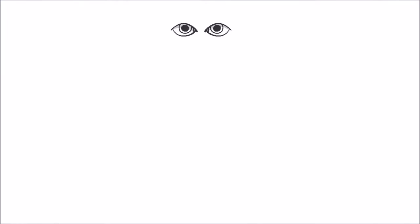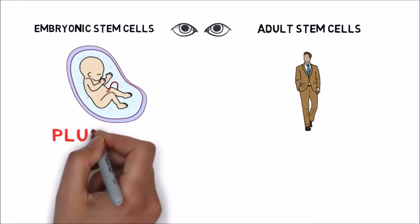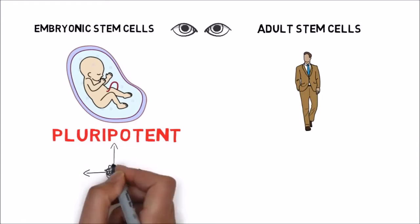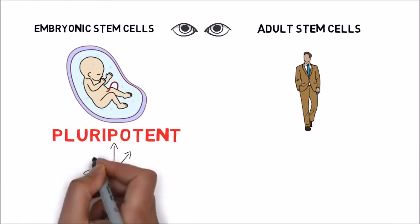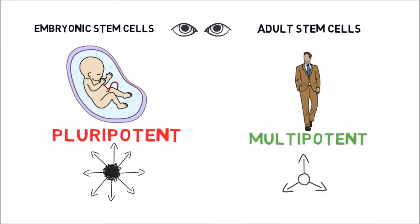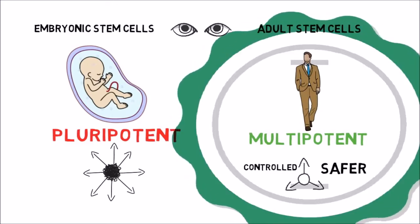First, let's look at the difference between human embryonic stem cells and adult stem cells. The embryonic stem cells are pluripotent, meaning that they can become any of the more than 200 known differentiated cell types of the human body. On the other hand, adult stem cells are multipotent, meaning that they can develop into more than one cell type, but are more limited and controlled and thus safer than pluripotent cells. We perform the adult stem cell treatment.